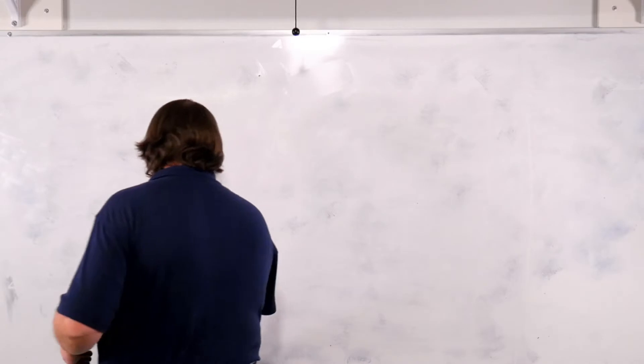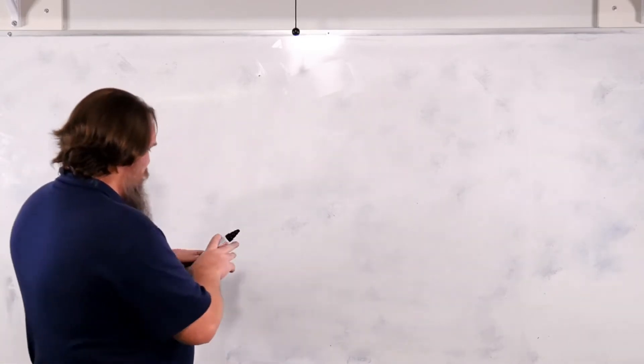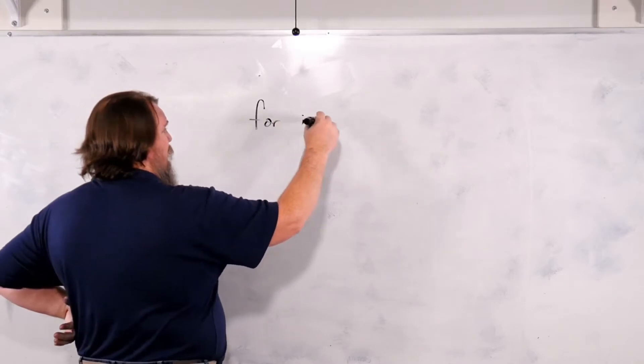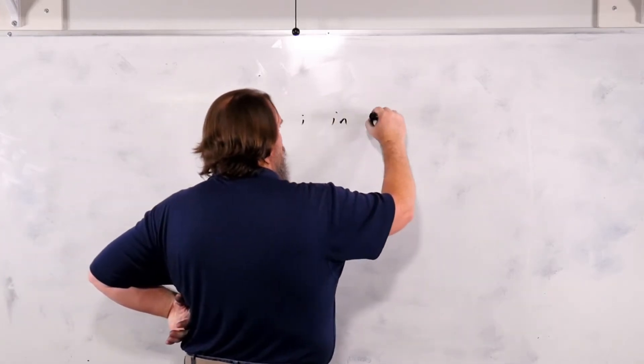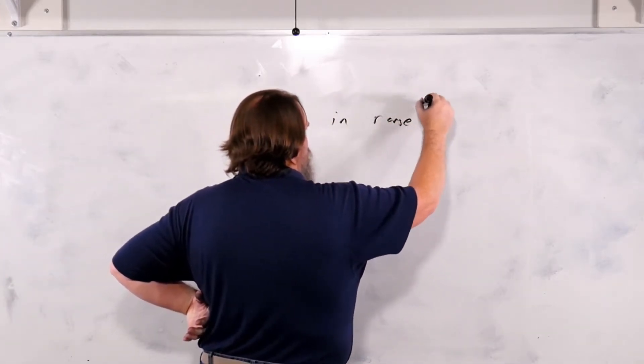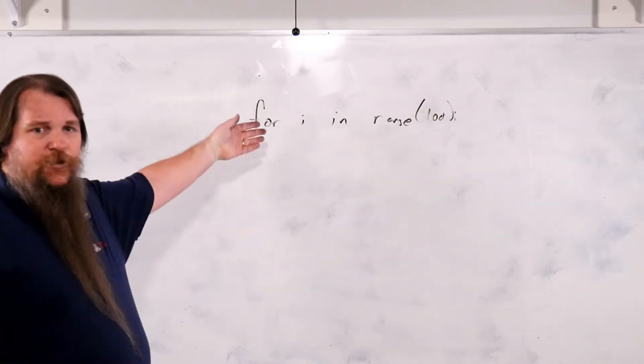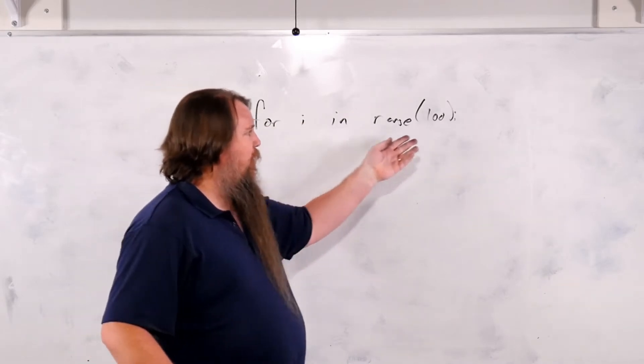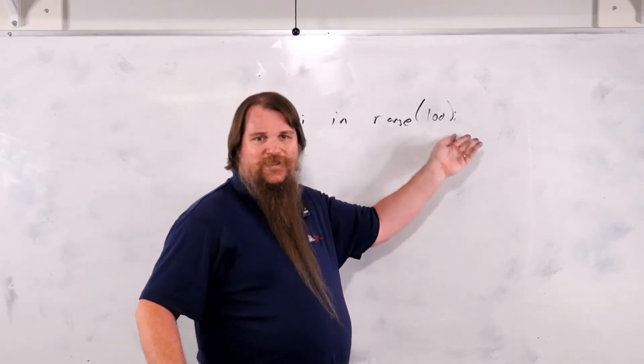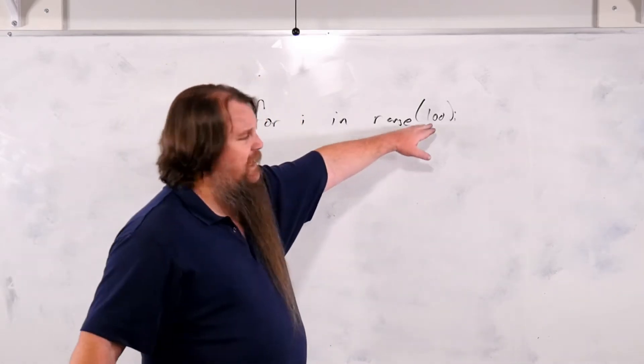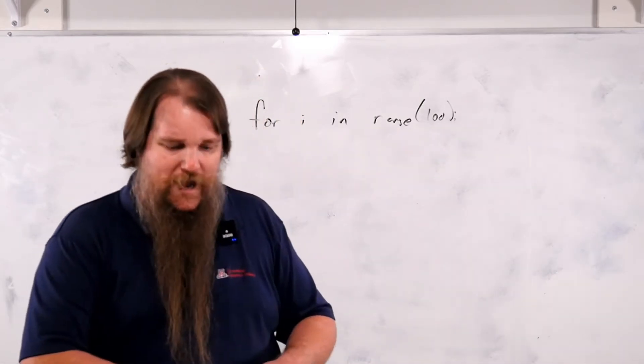So I've already shown you in a for loop that we can say for i in range 100. And what this will do is it will loop over, it'll set i for all the values from 0 to 99. So this 100, it's an exclusive upper bound.